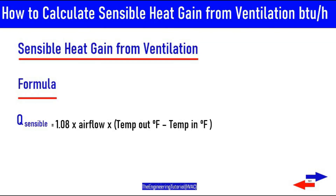The sensible heat gain from ventilation is calculated using the same equation as for infiltration: Q equals 1.08 times airflow times delta T. Remember that 1.08 is not a universal constant — it is derived from properties of air at standard conditions of 69 degrees Fahrenheit, dry air at sea level. Air at other conditions and elevations will cause this factor to change.